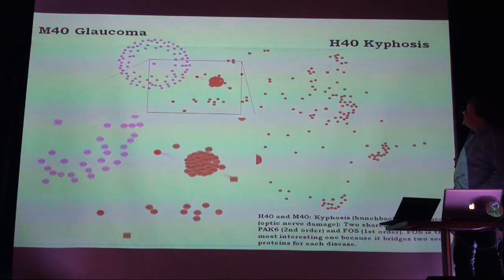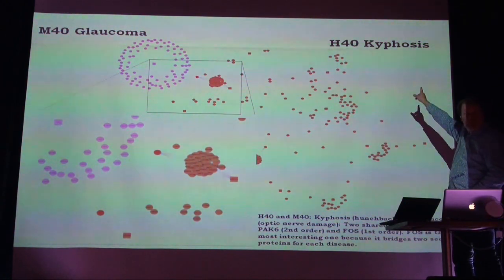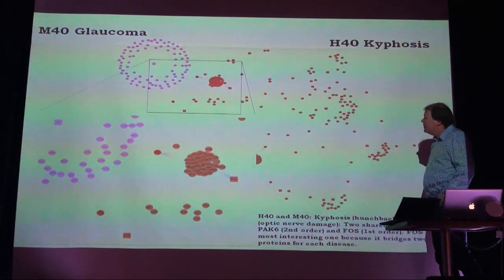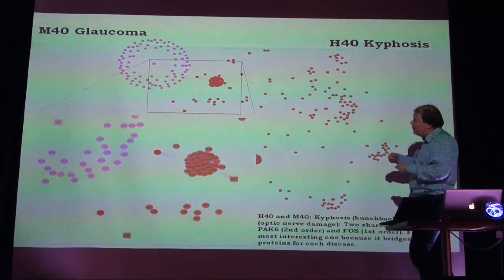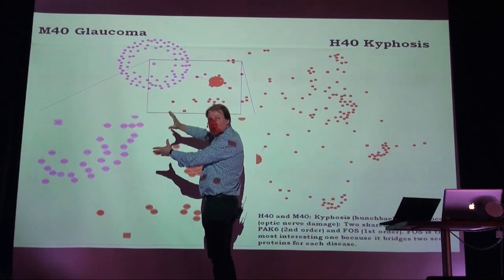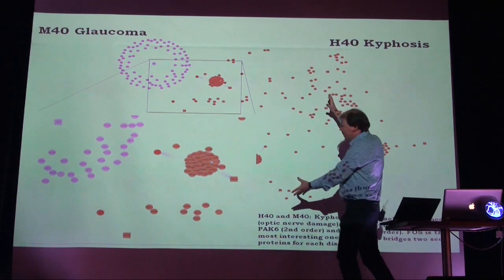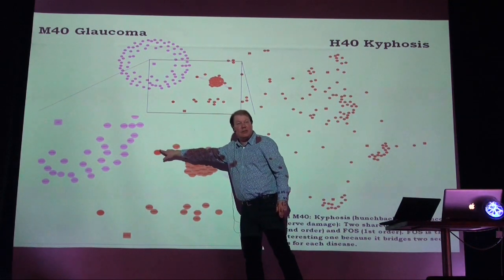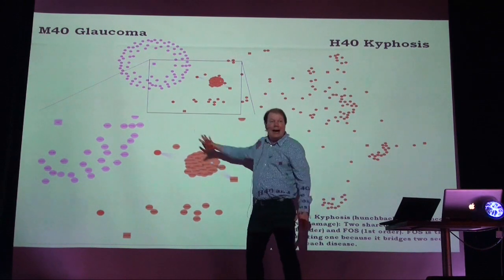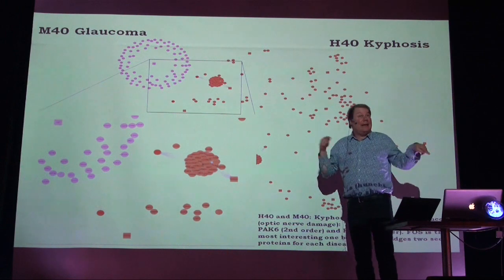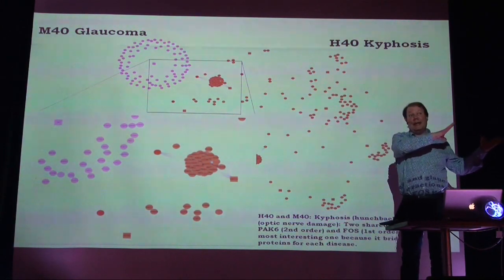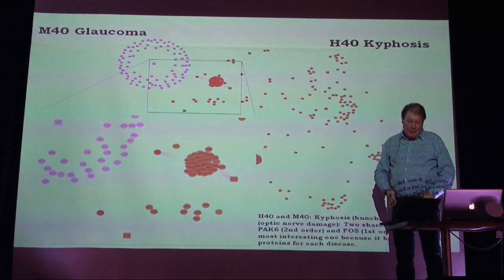We have two example diseases: glaucoma - optic nerve damage - and kyphosis, which is hunchback. We found these two diseases co-occur much more than you would expect. To bring this back to the DNA and genes, we look at the network of genes behind one disease, then the network behind the other, and see whether they share genes. If a shared gene is mutated, it could explain why these very different diseases co-occur. That is how we use phenotypic data from hospitals to try to understand genotypes and DNA.